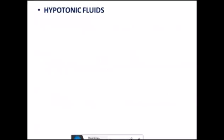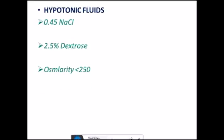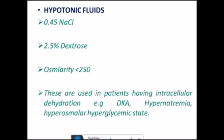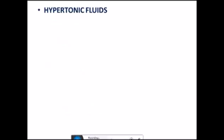Some examples of hypotonic fluids: these are 0.45% NaCl, 2.5% dextrose. Osmolality is less than 250. Isotonic obviously they have more than 310, isoosmotic to the body. These are used in patients having intracellular dehydration like hypernatremia or diabetic ketoacidosis, hyperosmolar hyperglycemic state.